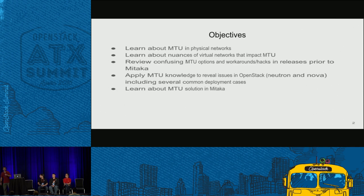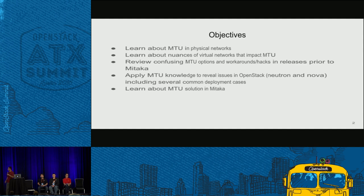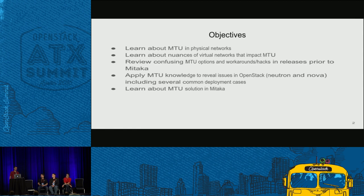The objectives: learn about MTU and physical networks — where does MTU come from? It's been around a very long time, and it's only now with virtual networks that things have become a serious problem. Learn about the nuances with virtual networks — tunnels like VXLAN or GRE add overhead to packets, which is the primary problem in Neutron. Review confusing MTU options and workarounds — hacks in releases prior to Mitaka. And apply MTU knowledge to OpenStack, because Nova also plays a role; bridges on the Nova side doing security groups must also have the correct MTU.